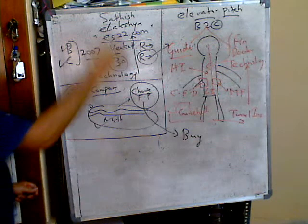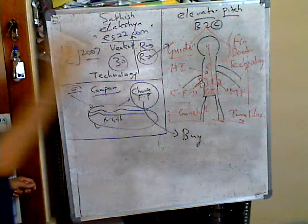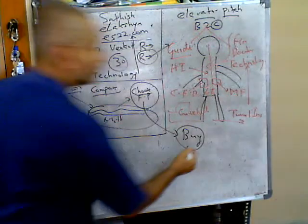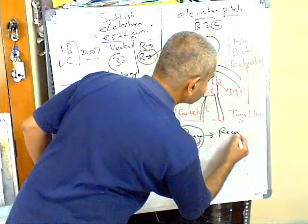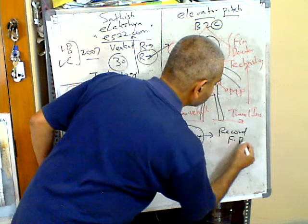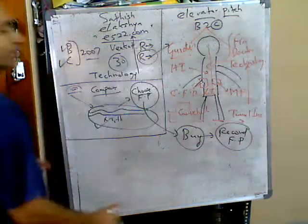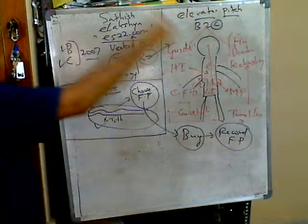Once the customer chooses the financial product, he then proceeds to buy the financial product. Again, all this happens through our website es22.com. Once the customer buys the financial product, we help him keep a record of his complete financial planning. The whole cycle is completed.